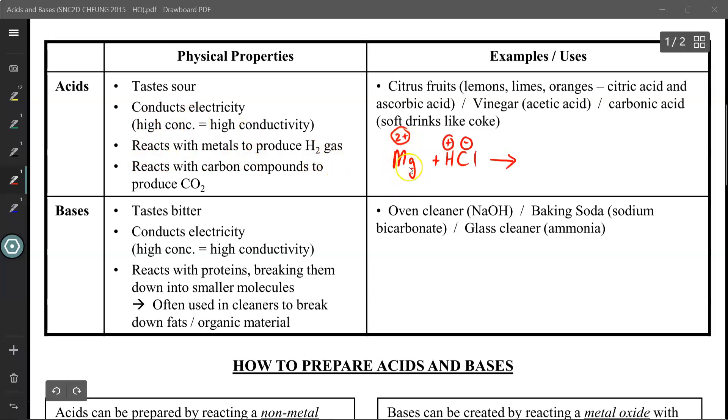Here we have magnesium reacting with hydrochloric acid in a single displacement reaction. Please press pause and try to predict the products of this reaction. When you're ready, press play and we'll take it up.